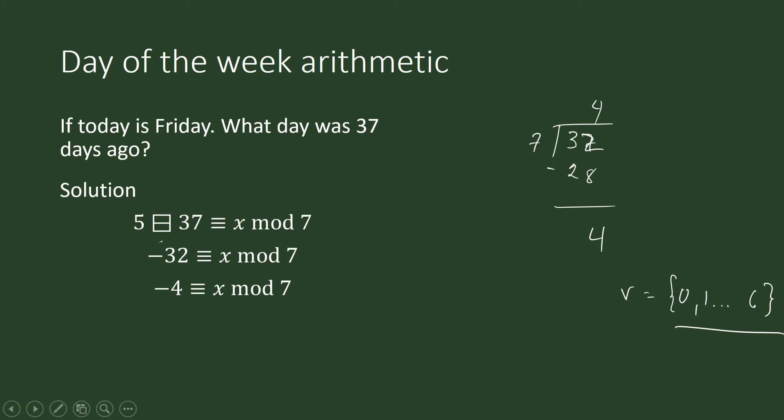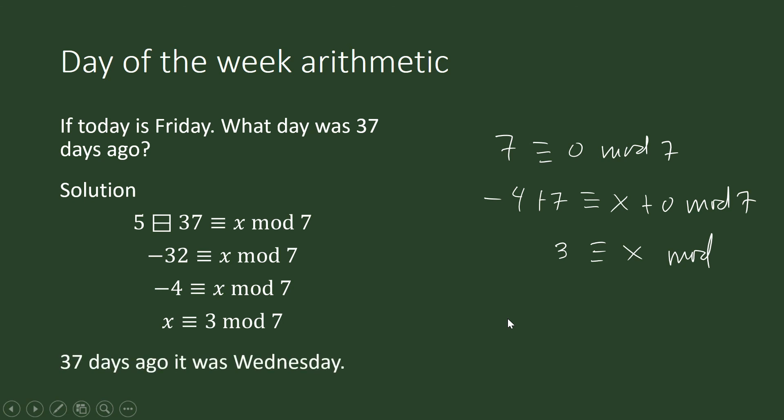So this is what you can do. We know that 7 is congruent to 0 modulo 7. So we shall now use your additive property of congruence arithmetic. Negative 4 plus 7 is congruent to x, whatever it is, plus 0 modulo 7. This is 3. And x plus 0 is just x. So that's it. x is congruent to 3 modulo 7. And 3 is a Wednesday. So if today is Friday, 37 days ago it was a Wednesday.